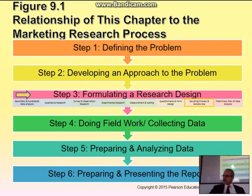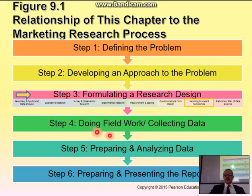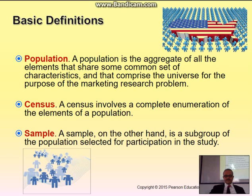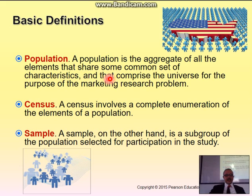This is a quick review of what we have been doing in this course — step one, step two, step three. We looked at the questionnaire, and now we're looking at sampling. Next chapter will go to step four. Now here is the sampling process and sample size. Let's look at the definitions — what do we mean by population?